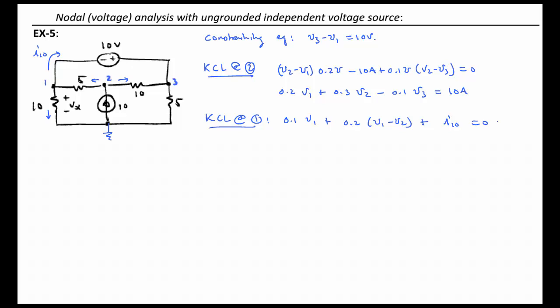Now, I need to replace I10 with an expression that involves the unknown voltages V1, V2, V3. The problem is I can't. We can't ever express the current through a voltage source in terms of the voltage across it or any other voltage. So, let's just hold on to that, and let's move on to node 3 and write a KCL equation there.